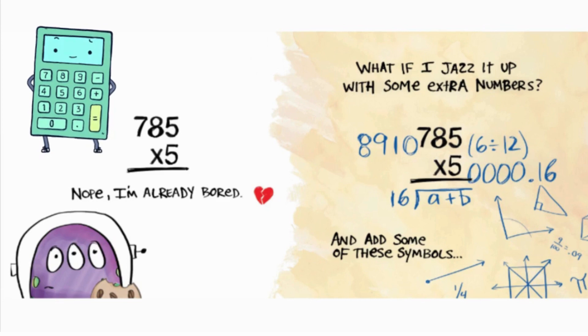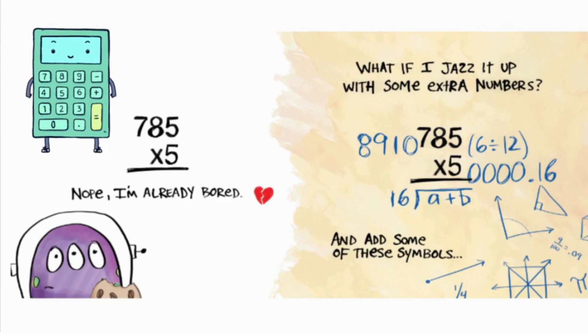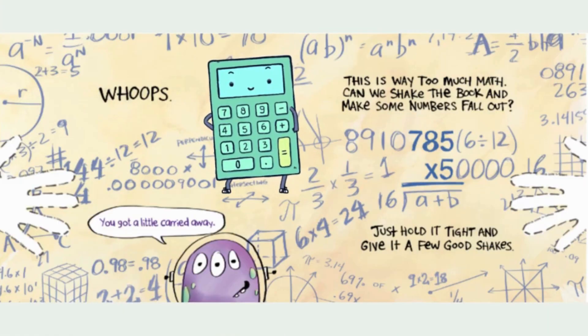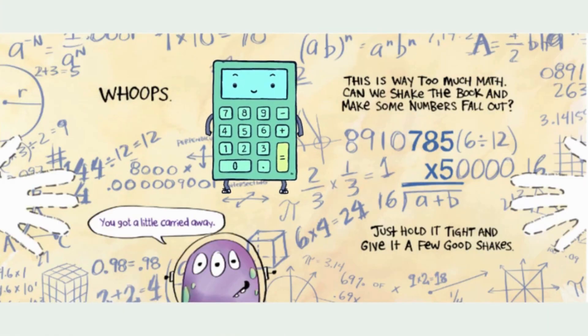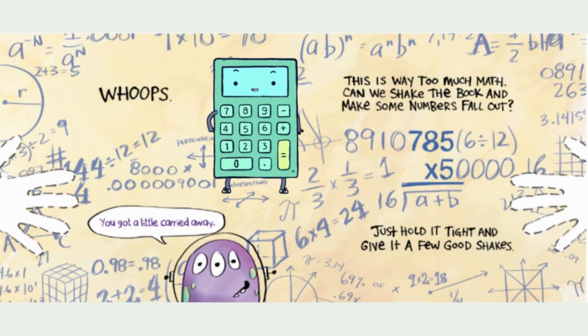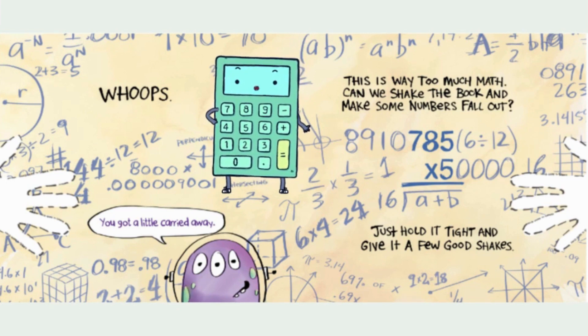What if I jazz it up with some extra numbers? And add some of these symbols. Whoops. You got a little carried away. This is way too much math. Can we shake the book and make some numbers fall out?